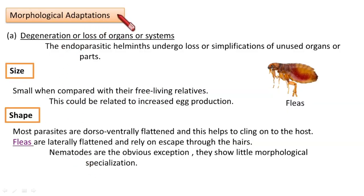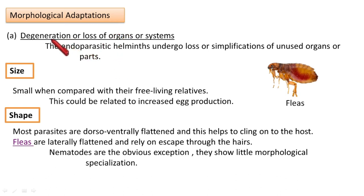First, the morphological adaptations. We are starting with the morphological adaptations now. Under that heading, the first type of adaptation is degeneration or loss of organs or systems. Some organs or systems are lost to support a good parasitic mode of life, especially in the case of endoparasites — those parasites that live inside the body of a host.